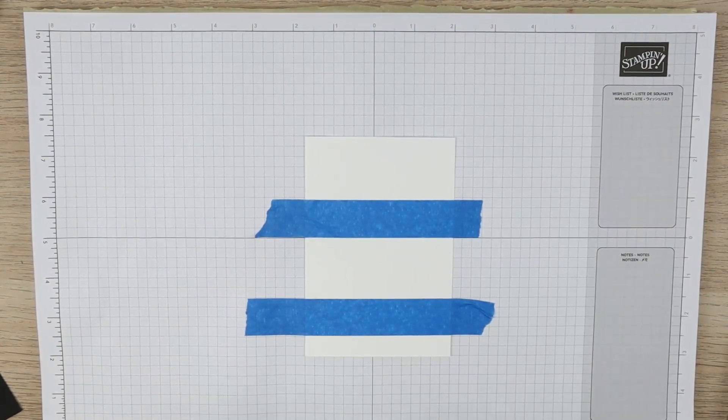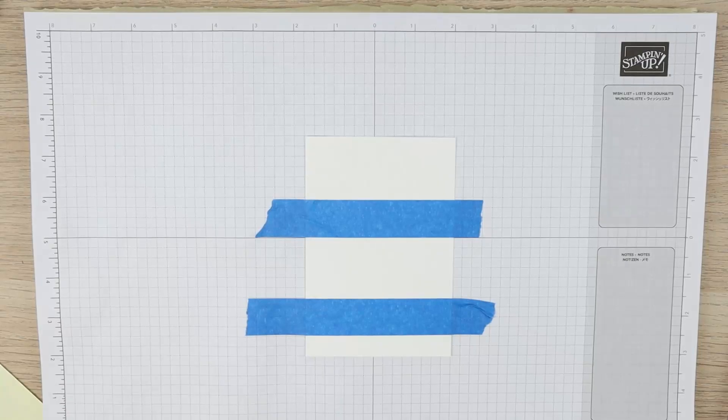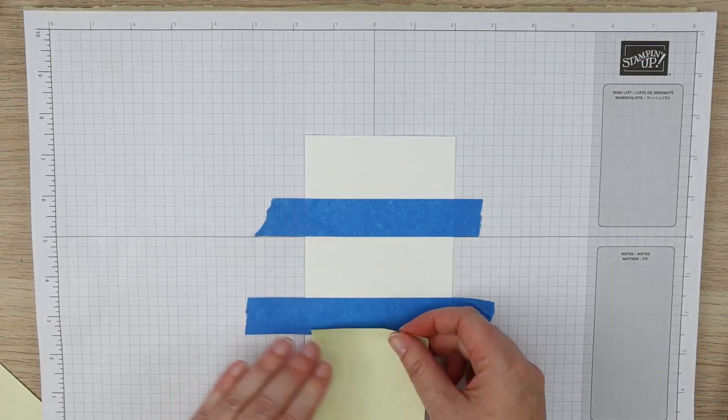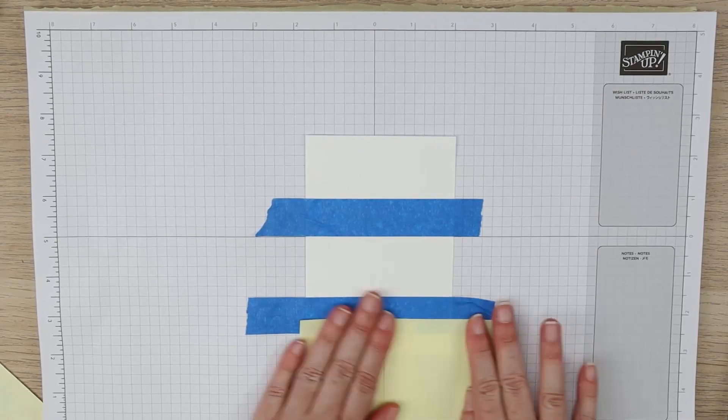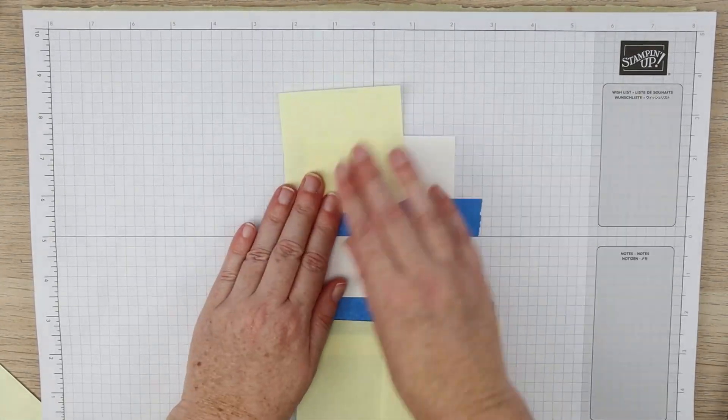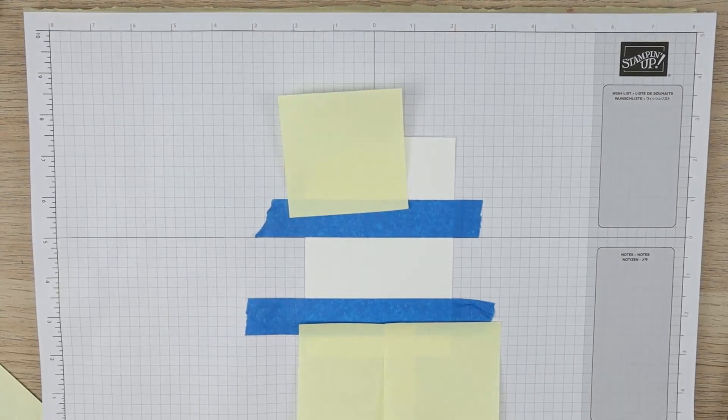So I don't get ink on the other pieces here, I'm actually just going to add some post-it notes on the bottom here so I don't accidentally get any ink past that painter's tape where I've masked off my area.